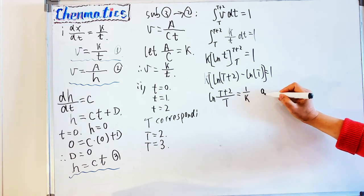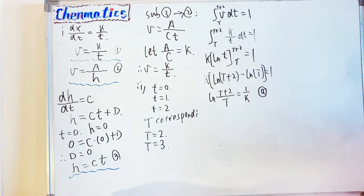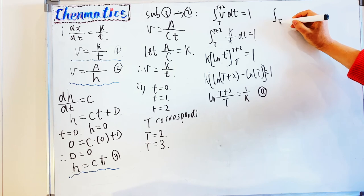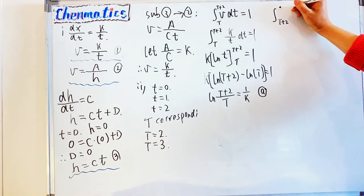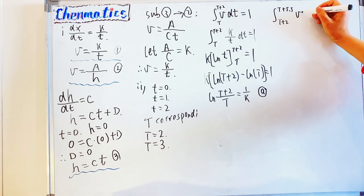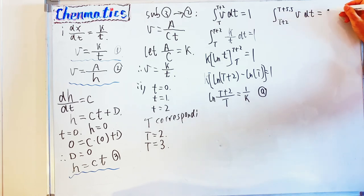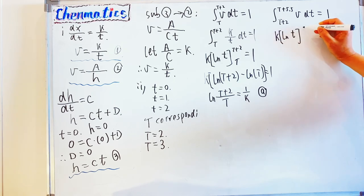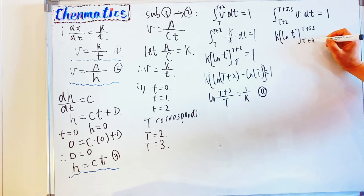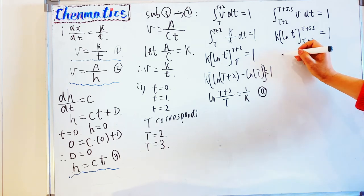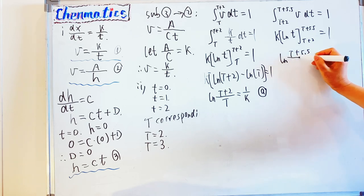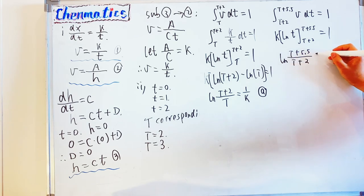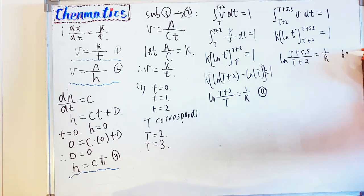They also tell us it takes a further 3.5 hours to clear the next one kilometer. So the next integration runs from T+2 to T+5.5, and the integral of velocity with respect to t equals one kilometer. Integrating gives k times log t with limits T+5.5 and T+2, equal to one. This gives log((T+5.5)/(T+2)) equals 1/k. We call this equation B.